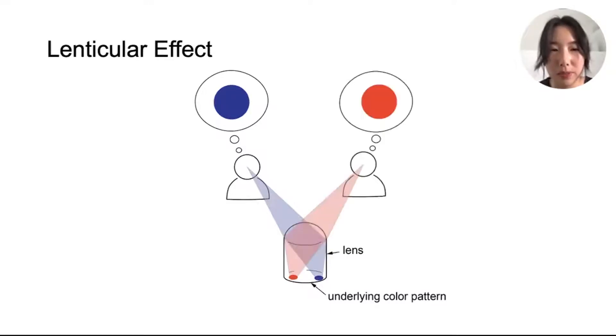If this person moves to the other side, the rays will instead be directed to the red dot. In this case, the entire lens will show up as red. This is how one lens reveals two different colors under two viewpoints.